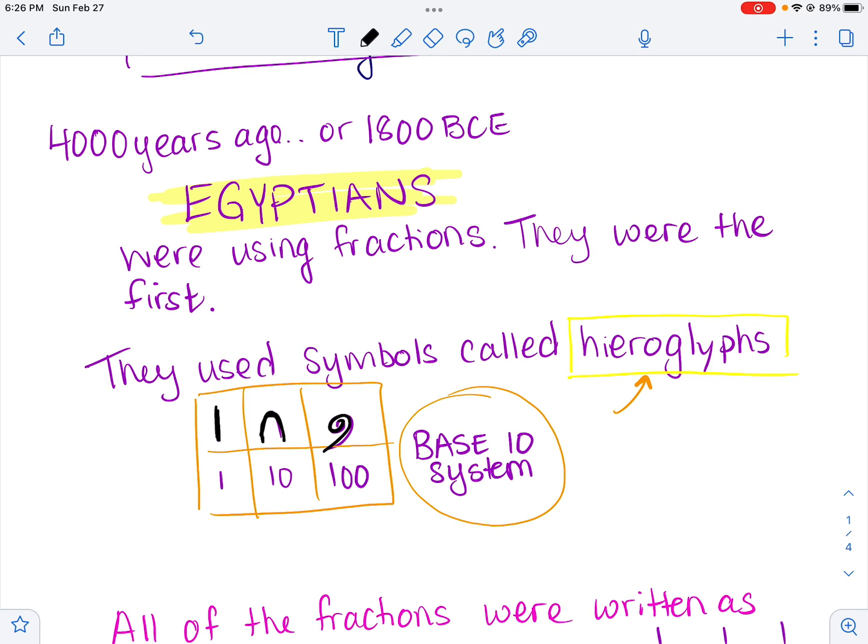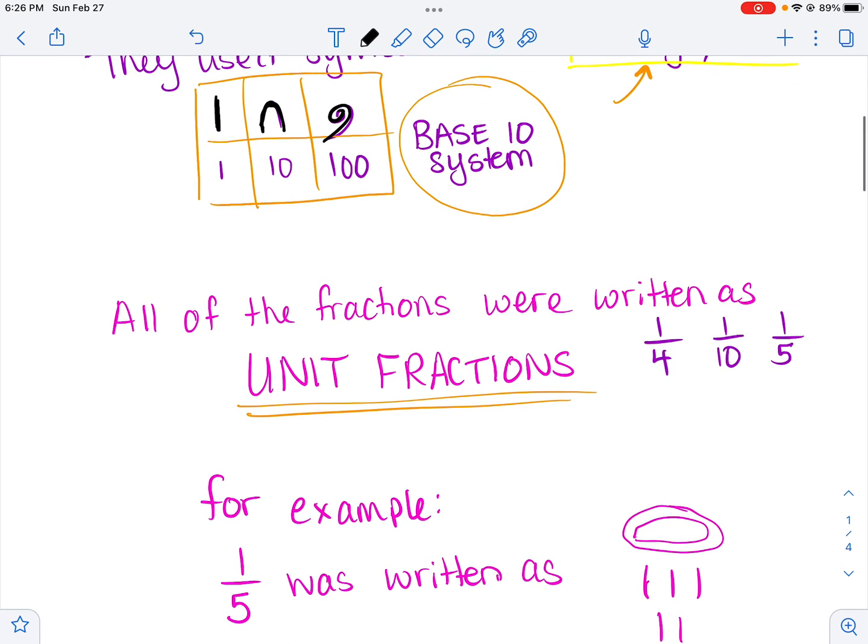And then another interesting thing about the way Egyptians wrote fractions was that all of them were written as unit fractions, which means they had a one in their denominator, all of them. That was the requirement to write a fraction. So they couldn't write three over four. They could only write, let's say you wanted to write three quarters. You would have to write that as a combination of unit fractions. So you would have to write it as a half plus a quarter. Because that's the only way they wrote fractions, in unit fractions.